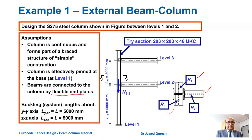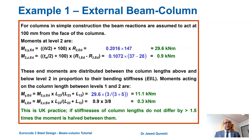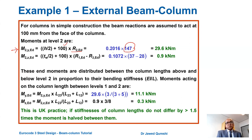The columns are connected with flexible end plates and the construction is simple construction. We are trying section 203×203×46. Section properties are obtained from the section table. The axial load is 277 kN. Reaction from beam one is 37 kN, beam two is 147 kN, beam three is 28 kN. The total load supported on this column is 589 kN. For the moment at level two in the major axis direction, as only one beam was connected, we have R2 times (h/2), which is 203/2. Converting to metres gives 0.206, and the resulting moment is 29.6 kNm.